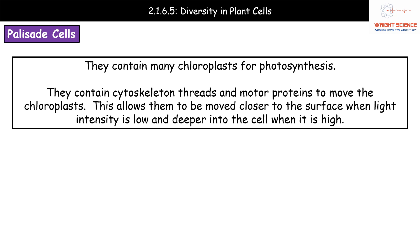Another adaptation is having lots of chloroplasts, which are the site of photosynthesis — so more chloroplasts means more sites where photosynthesis can take place. Palisade cells also have threads in the cytoskeleton with motor proteins to move the chloroplasts. When there's high light intensity, you don't want chloroplasts too close to the surface; at low light intensity you need them as close to the surface as possible to capture as much light as reaches the leaf. The ability to move chloroplasts using the cytoskeleton and motor proteins is critical to the functioning of the leaf.